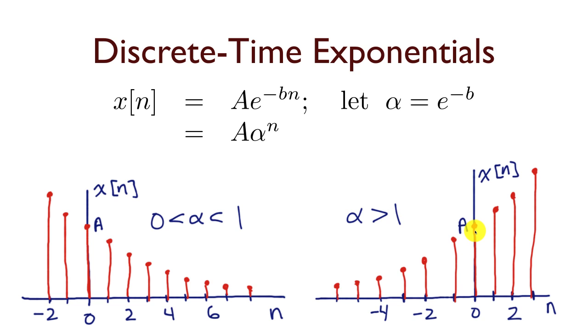If alpha were 2, for example, then every time I incremented n, I would basically double the value of x(n). You can see that's going to blow up fairly quickly.